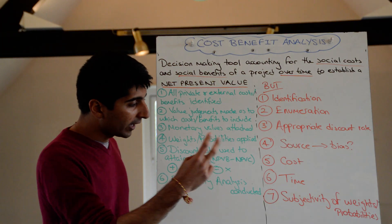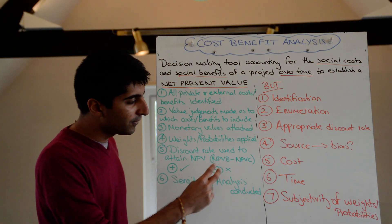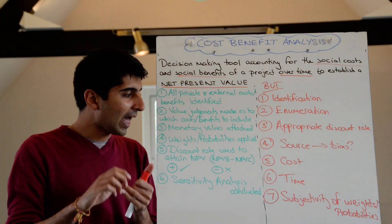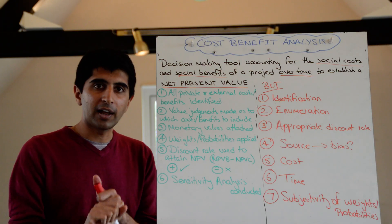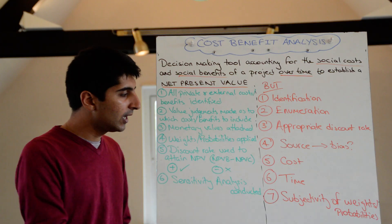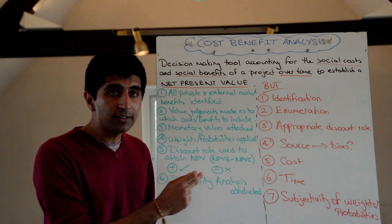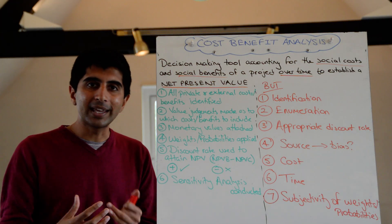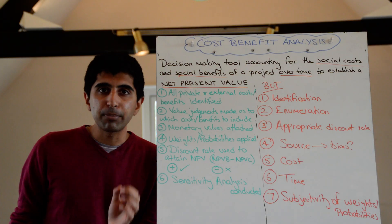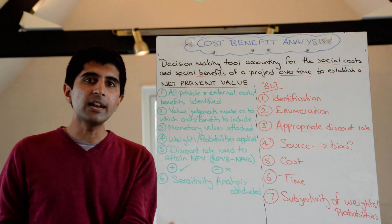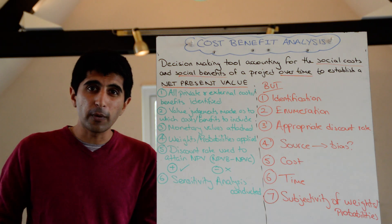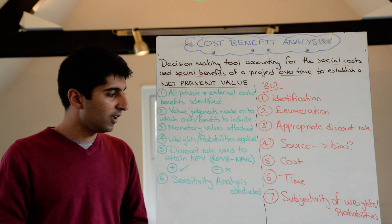What this does is give us two figures: a net present value of benefits and a net present value of all the costs included in the project. You take the costs away from the benefits to get your overall net present value. If that net present value is positive, go ahead — efficient allocation of resources. If it's negative, don't go ahead, as it would be an inefficient allocation.